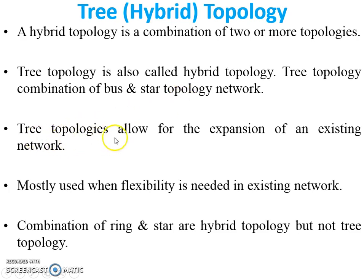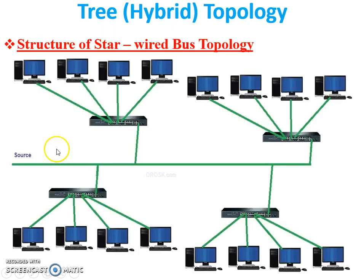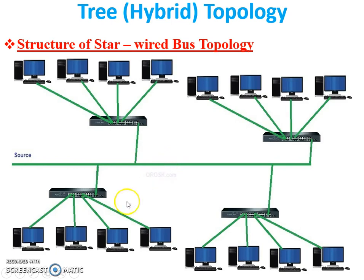Tree topology allows for the expansion of an existing network. Here we have one star network, another star network, a third star network, and a fourth. All star networks are connected with a single bus. We can also expand the bus from here and attach another network or another topology.